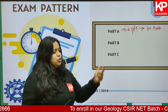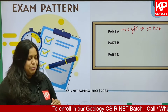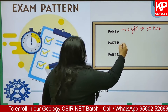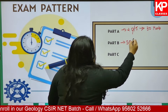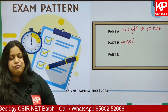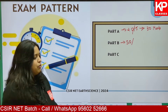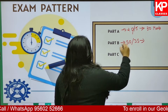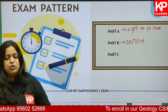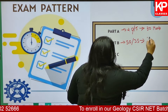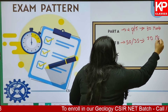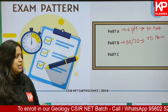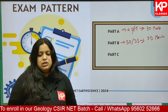Part B is a comparatively easier section. There are a total of 50 questions, and out of these 50, the maximum number of attempts you can make is 35. Part B is also a 2-mark section, hence the total mark here will be 70.